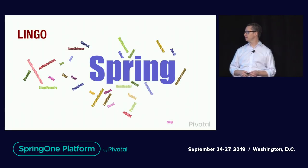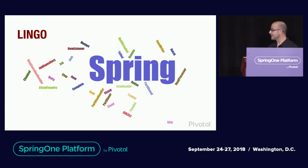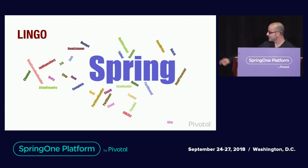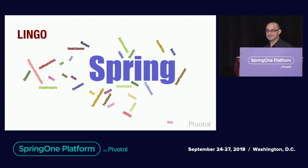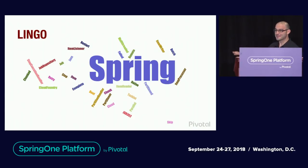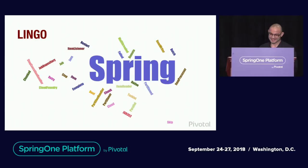A funny fact about this slide — when we generated this tag cloud, have you noticed that the word 'skip' was somehow skipped? So I wonder which kind of AI is used behind the scenes, but skipping the word skip.